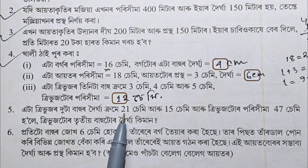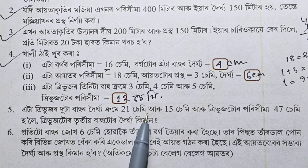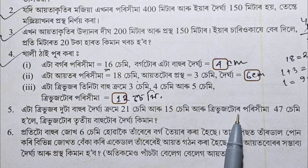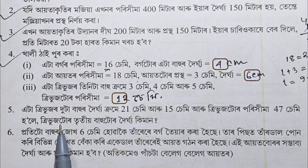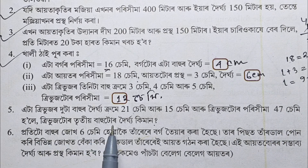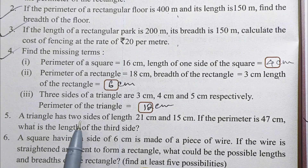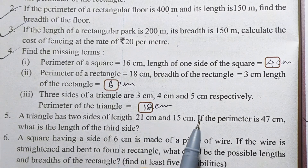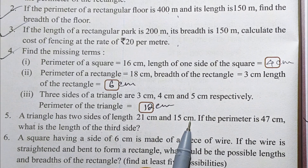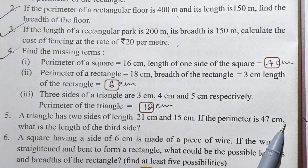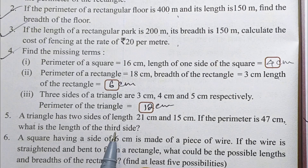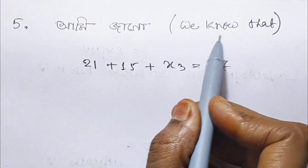Next, a triangle has sides 2cm, 5cm and 5cm. Another triangle has sides 3cm, 5cm and 7cm. A triangle has 2 sides of length 21cm and 15cm. If the perimeter is 47cm, what is the length of the third side?